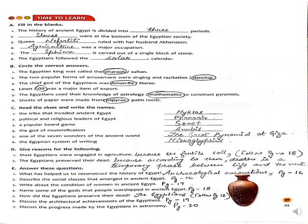In Part C, we see the clues and write the names. The tribe that invaded ancient Egypt was the Hyksos. The political and religious leaders of Egypt were the Pharaohs. The popular board game was Sinat. The god of mummification is known as Anubis. One of the seven wonders is the great pyramid at Giza. The Egyptian system of writing is hieroglyphics.